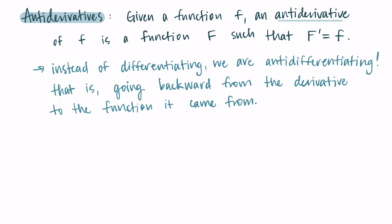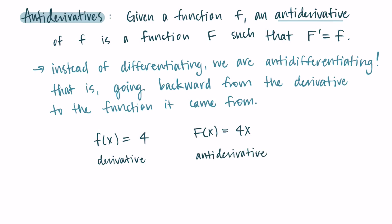The best way to see this is to look at an example. Let's say I give you f of x equals 4, and I want you to find its antiderivative. The antiderivative would be big F of x, and that would equal 4x. How do you know this? Let's check — the derivative of 4x is 4. So the antiderivative, when we take its derivative, gives us back what we started with.